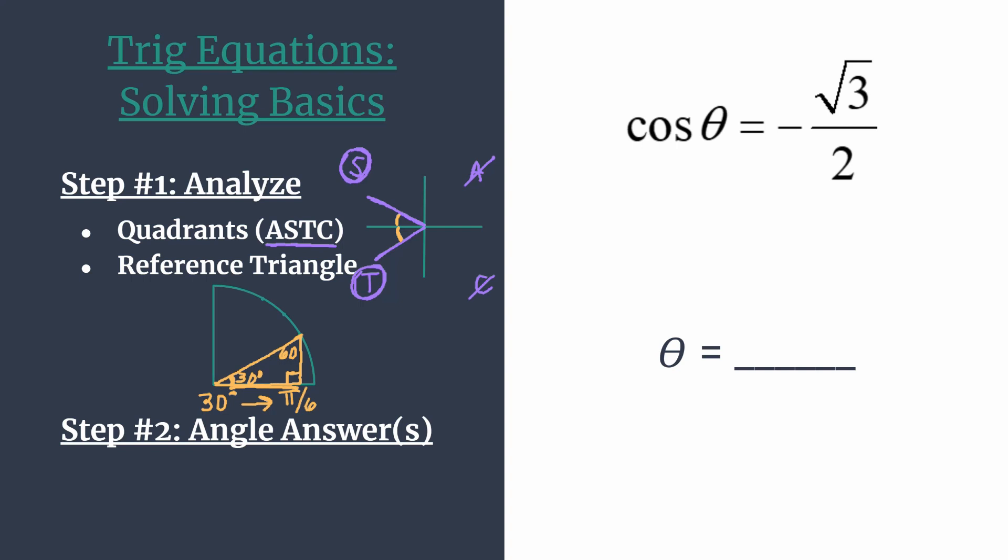Remember, reference angle is just from terminal side rotating to x-axis. And so each of these reference angles for each of our angles is going to be pi over 6 radians. And that will be really helpful for our next step. In step 2, we're going to state our angle answers. Let's do that first for just the angles that are on the unit circle, and that's going to be those angles that are on the interval from 0 to 2 pi. So let's start by naming our quadrant 2 angle.